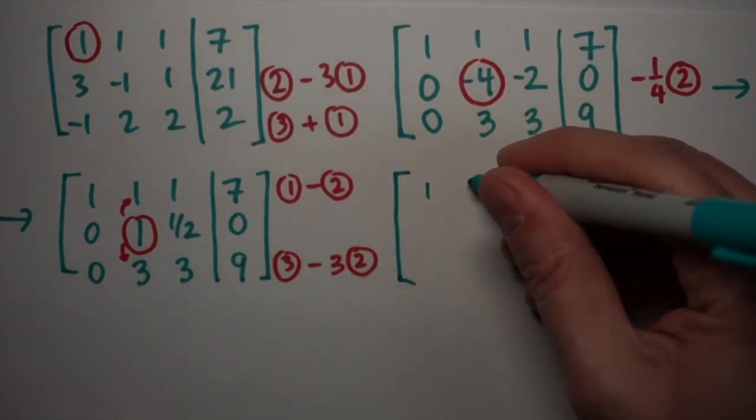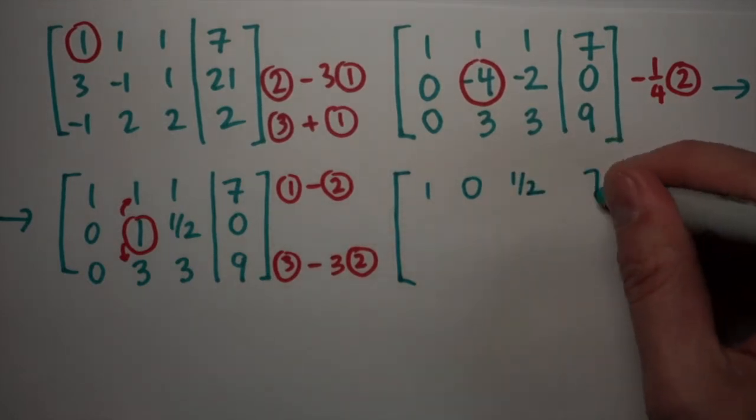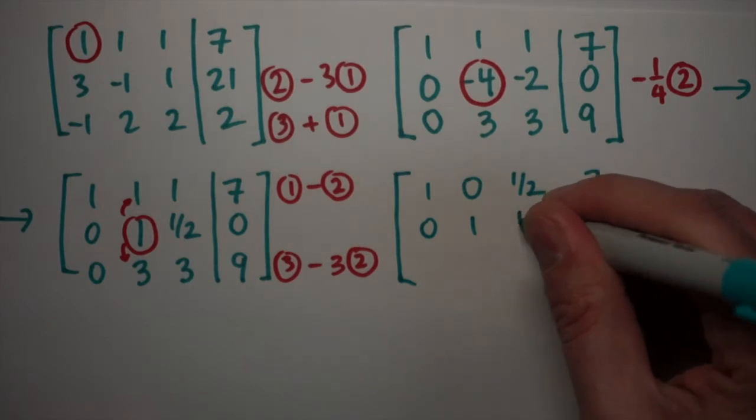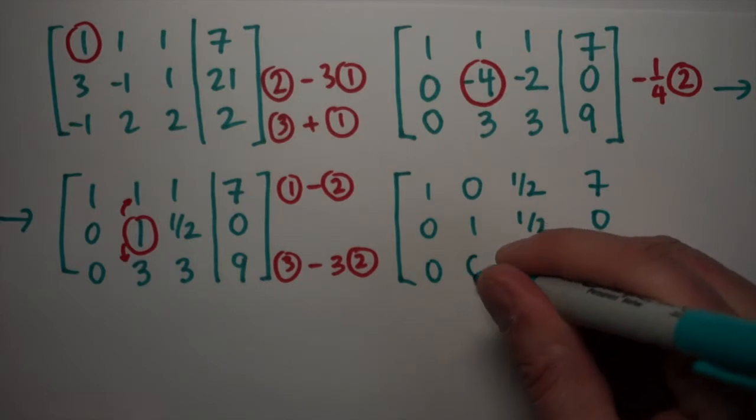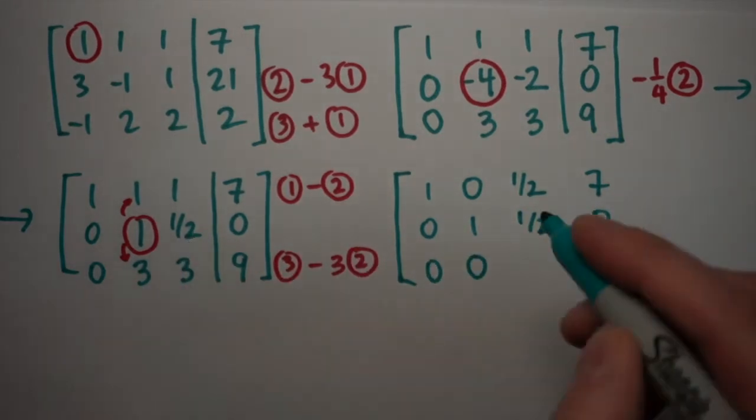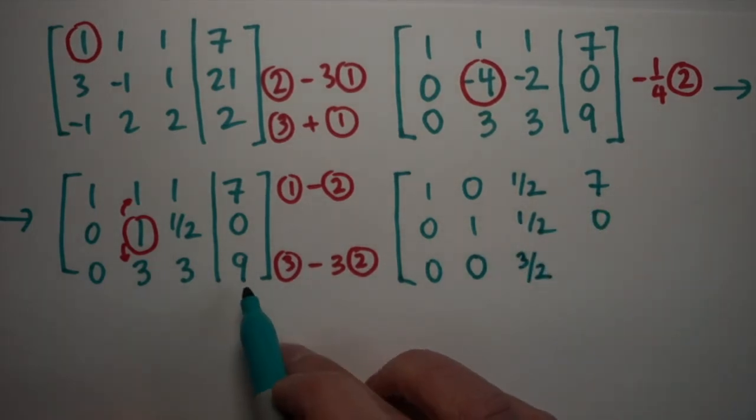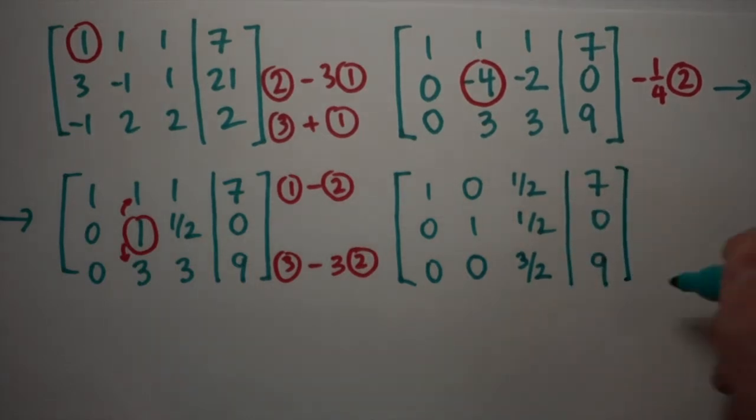If I do both these actions, my top row becomes one. One minus zero is one. One minus one is zero. One minus one half is one half. And seven minus zero is seven. The middle row stays the same. And the last row becomes zero. Three minus three times one is zero. Three minus three halves is six halves minus three halves, so it's three halves. And then nine minus zero is still zero. And so after this next set of actions, I end up with exactly this. All zeros except for the one in the upper left corner. And my second column is zero, one, zero, which is what I want for diagonal form.